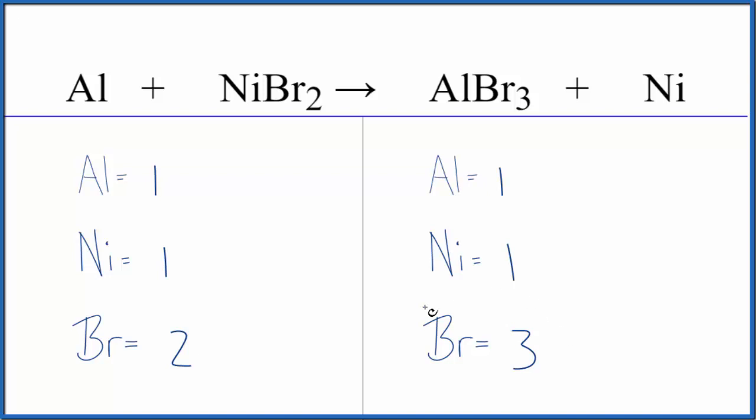And the challenge here is that we have this odd number, this three, and then we have an even number. So the best way to deal with this is get this to be an even number. So I'm going to put a coefficient of two in front of the aluminum bromide. One times two, so I have two aluminum atoms, but three times two, that'll give me six bromine atoms.